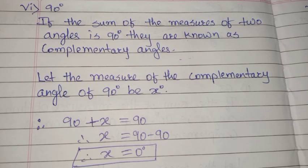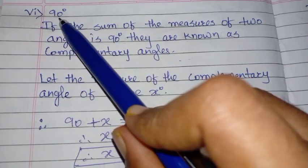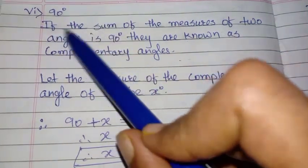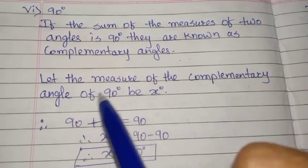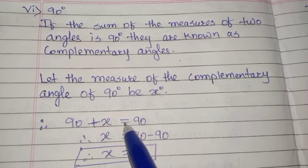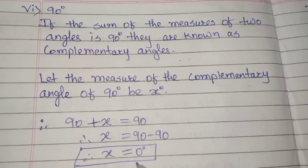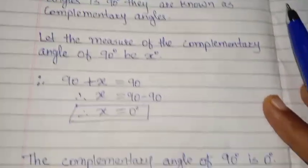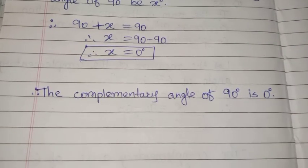Children, follow the same pattern and solve the 3rd, 4th, and 5th sums in your notebook. Now we will discuss the 6th one, which is 90 degrees. Write the definition, then let the complementary angle of 90 degrees be x degrees. Therefore, 90 + x = 90. Therefore, x = 90 − 90, that is 0. Therefore, the complementary angle of 90 degrees is 0 degrees.